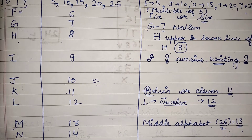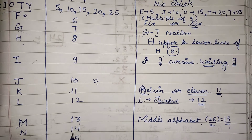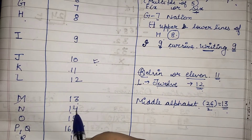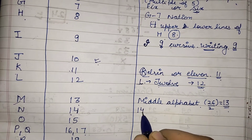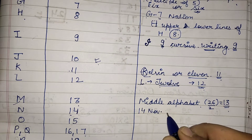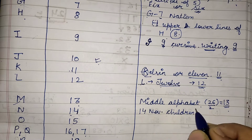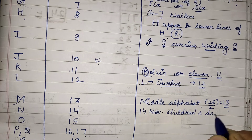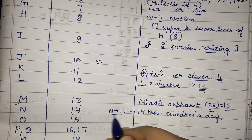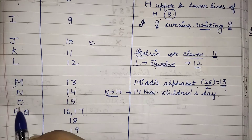Next, N and fourteen. We all know Chacha Nehru loved children, and his birthday is celebrated on the fourteenth of November as Children's Day. So we can remember with this trick that the position of N is fourteen.